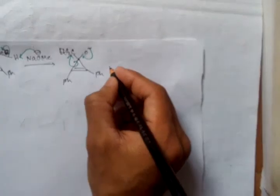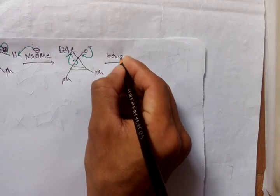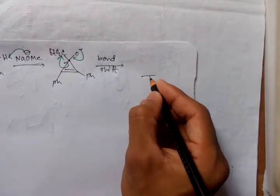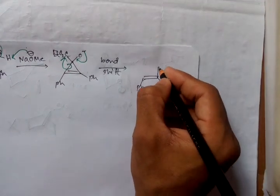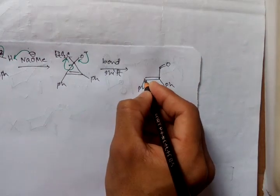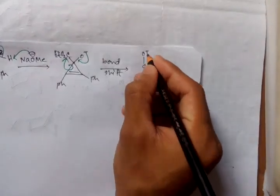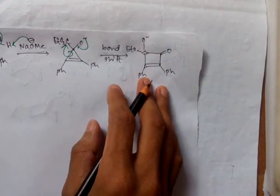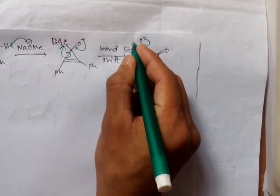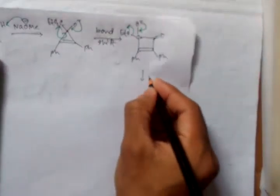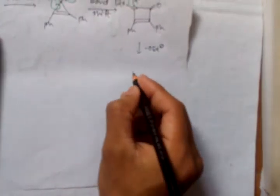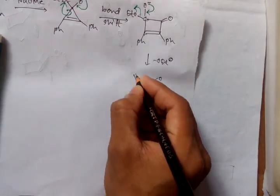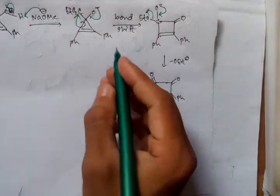When this negative charge comes here, this bond shifts. We get a bond shift, and the intermediate has a double bond oxygen, C with O minus, and another O minus connected here. When this negative charge falls here, the leaving group is removed from the system, and finally we get a ring expansion product.